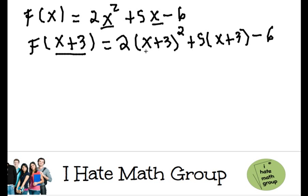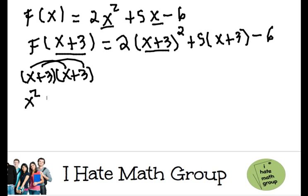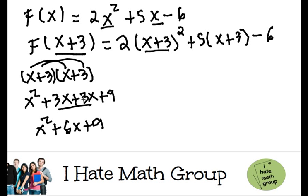Now, this x plus 3 square, I need to either foil it by doing x plus 3 times x plus 3, and that's just going to be x squared plus 3x plus 3x plus 9, or x squared plus 6x plus 9, because I'm just doing 3x plus 3x.